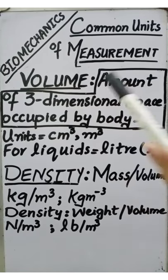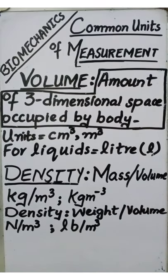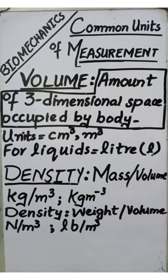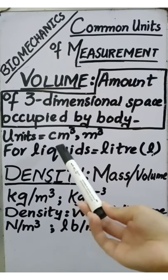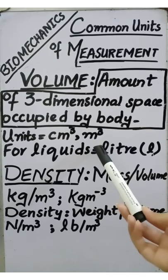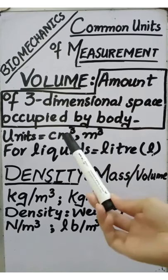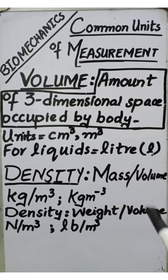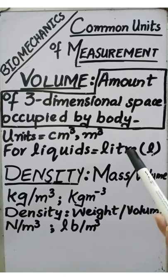The next measurement is volume. Volume is the amount of three-dimensional space occupied by a body — width-wise, height-wise, and depth-wise. The unit for volume is centimeter cubed or meter cubed. We use a cube because volume is a three-dimensional measurement. For liquids, volume is not expressed in centimeters or meters; rather, it is expressed in liters, abbreviated as L.